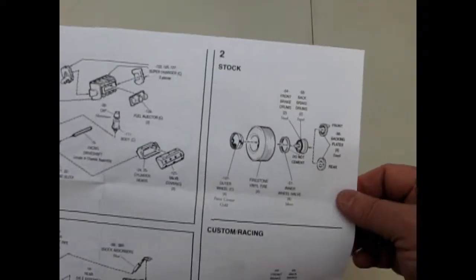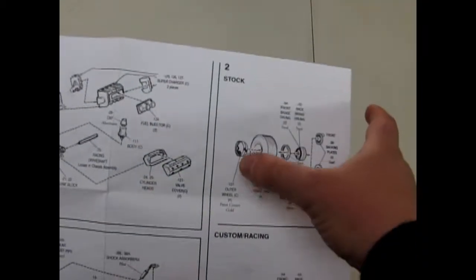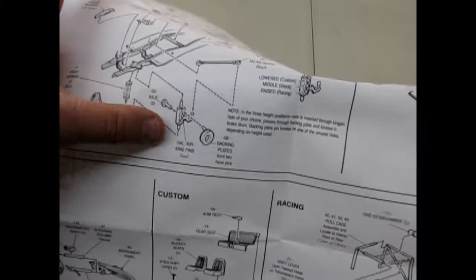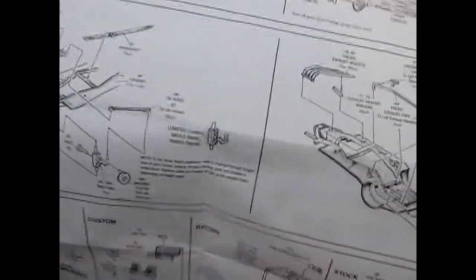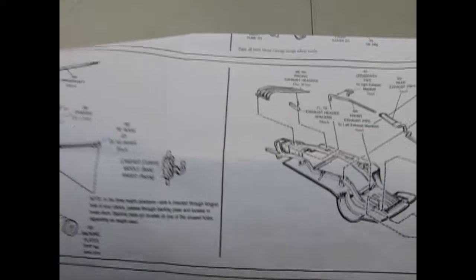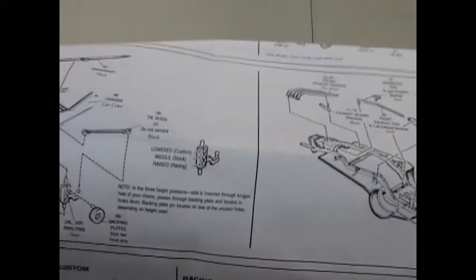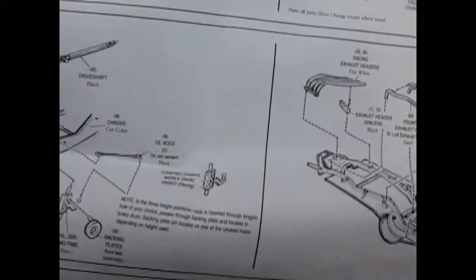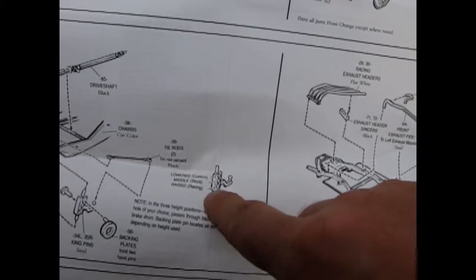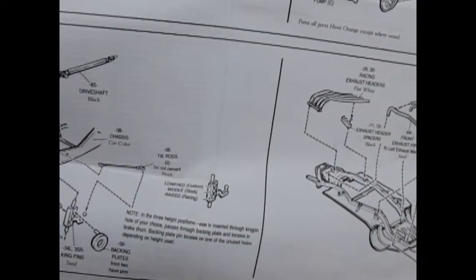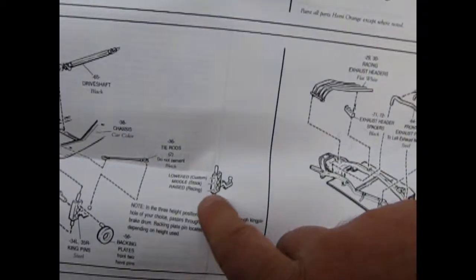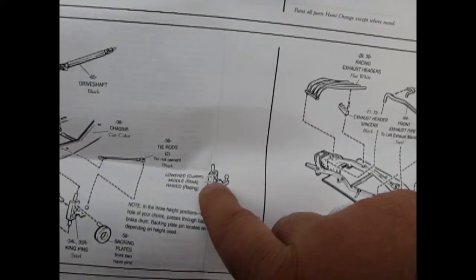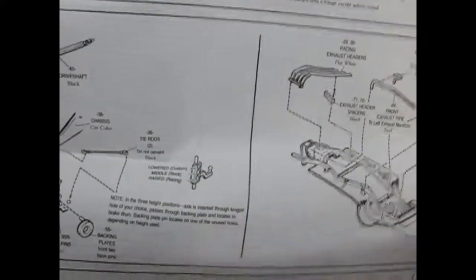And there's our Studebaker stock wheels, which are almost like baby moon hubcaps on there. And it again has poseable wheels with a nice tie rod. And this is much like the 55 Chevy Nomad kit, where you have the three heights to your front spindle. So you can raise it for drag racing, put it in the middle for stock, or lower it by putting it at the top. So that's always cool.